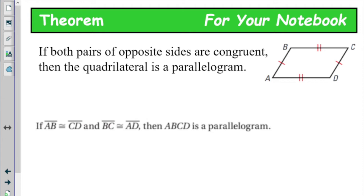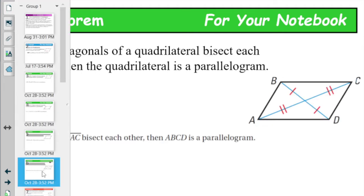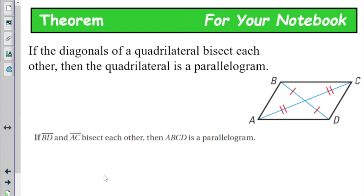Yesterday we said if we've got a parallelogram then the opposite angles are congruent, so today we say if the opposite angles are congruent, then we've got a parallelogram. We could use consecutive angles being supplementary, but if you have consecutive angles supplementary, opposite angles being congruent is going to have to be true, and checking that is easier. So you won't see the supplementary property on the list, but you will see the diagonals bisecting each other — if diagonals bisect each other, then we've got a parallelogram.